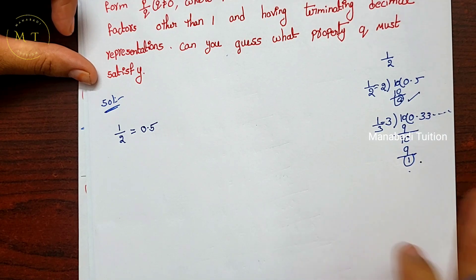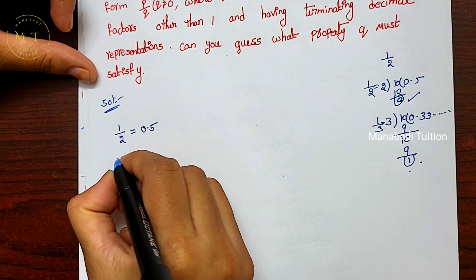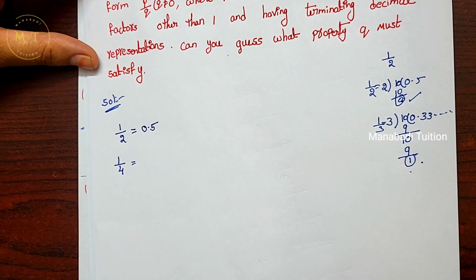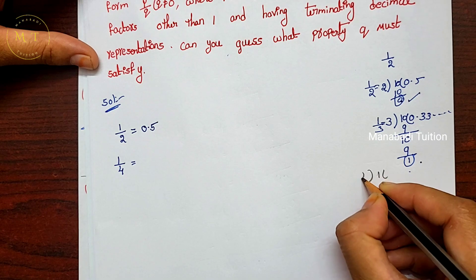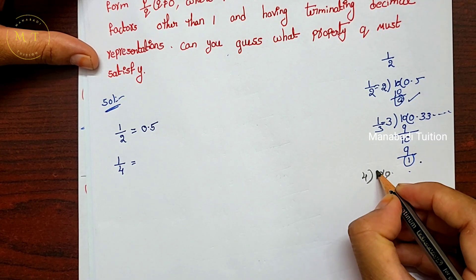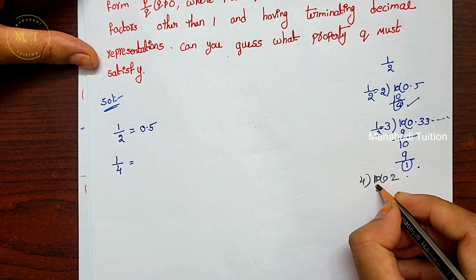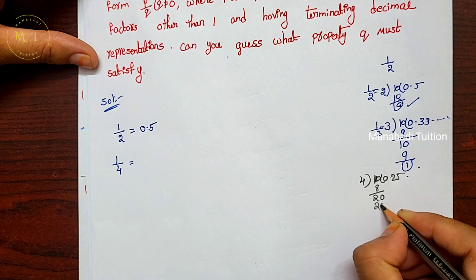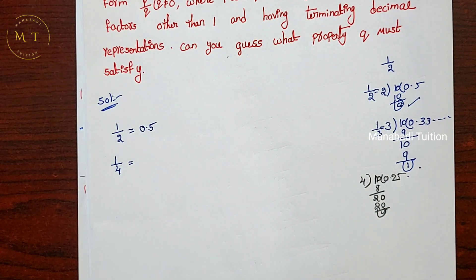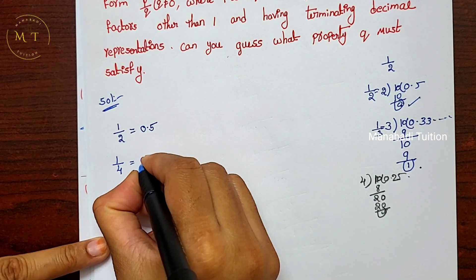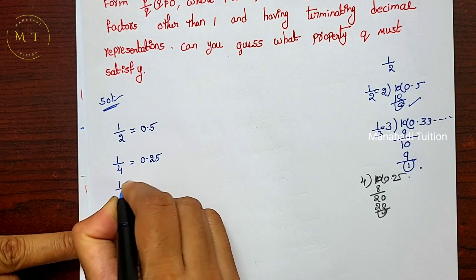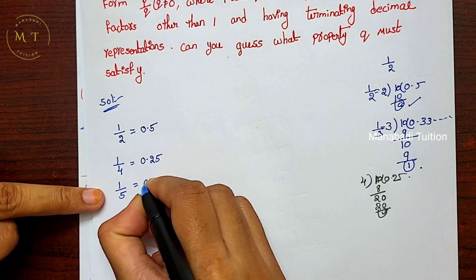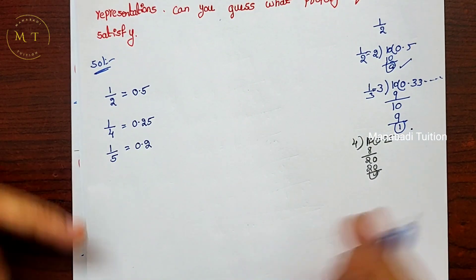Next check 1 by 4: divide 1 by 4. We get 0.25 and the remainder is 0, so it is terminating. Next, 1 by 5: divide 1 by 5, we get 0.2. That is terminating.